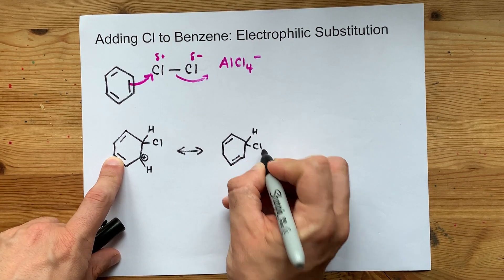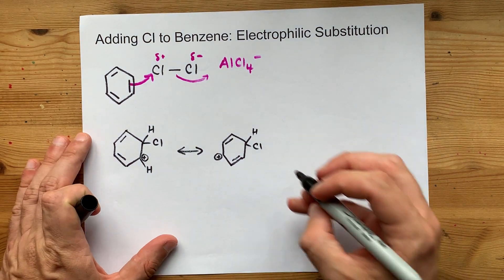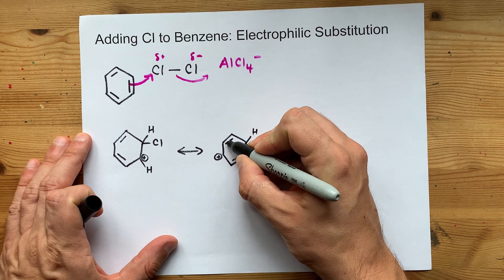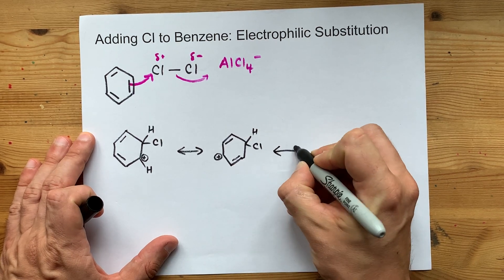You still have your H and Cl, but your carbocation is delocalized to there, and similarly this double bond may be attracted to the slight positive charge there.